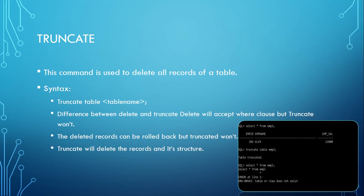Earlier we have seen the DELETE command. DELETE was also deleting records, so we need to understand what is the difference between DELETE and TRUNCATE. TRUNCATE also deletes all records of a table, but so does DELETE. What's the exact difference?